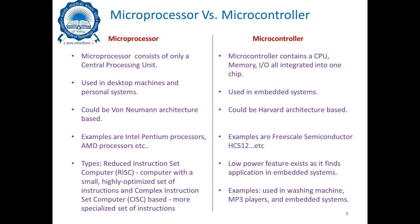Microprocessors have two types: RISC — Reduced Instruction Set Computer, which has a small, highly optimized set of instructions — and CISC — Complex Instruction Set Computer, which is more oriented towards specialized instruction sets. Examples of microprocessors include Intel Pentium and AMD processors. Microcontrollers have a low-power feature, making them suitable for embedded systems such as washing machines and MP3 players. Examples include the Freescale HCS12.